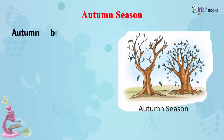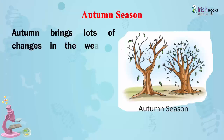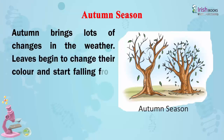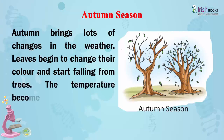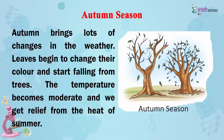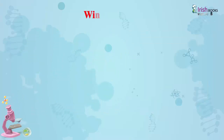Autumn Season. Autumn brings lots of changes in the weather. Leaves begin to change their color and start falling from trees. The temperature becomes moderate and we get relief from the heat of summer.